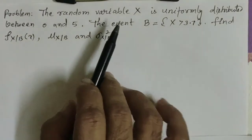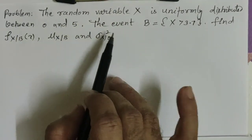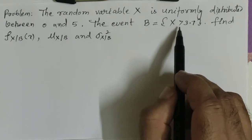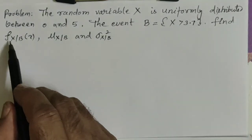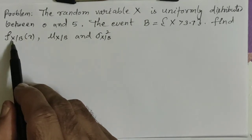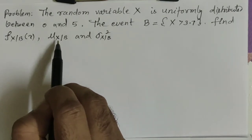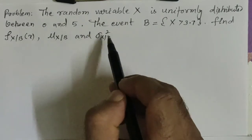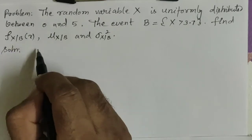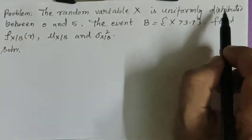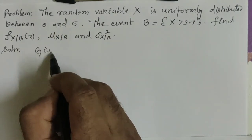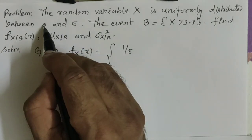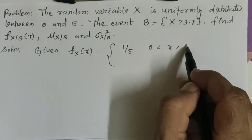Consider the next problem. The random variable X is uniformly distributed between 0 and 5. The event B = {X > 3.7}. Find the probability density function of X given B, the conditional mean μ_{X|B}, and the conditional variance. Since X ~ Uniform(0,5), f_X(x) = 1/(5-0) = 1/5, for 0 ≤ x ≤ 5, and 0 otherwise.